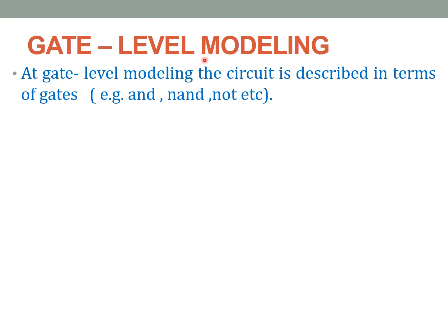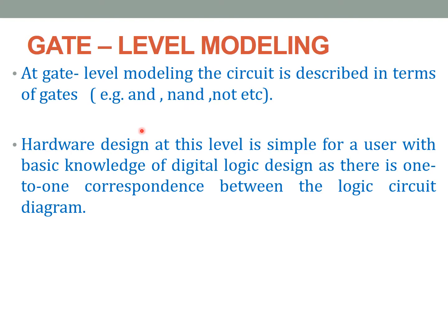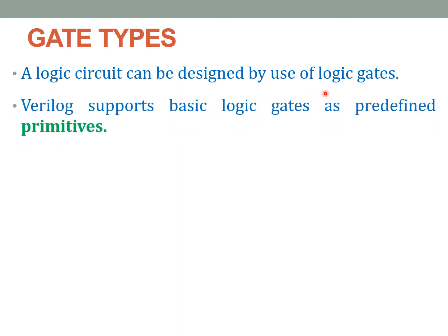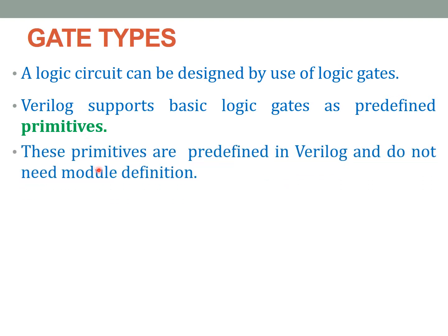Gate level modeling, as the name itself suggests, describes the circuit in terms of logic gates like AND, NAND, NOT, etc. Coding at this level is very simple for a beginner in Verilog because there is a one-to-one correspondence between the logic circuit diagram and the program written in Verilog. In Verilog, we have logic gates defined as primitives — predefined codes written for every logic gate. We can simply instantiate those primitives in the main code without writing a separate module definition for each gate.